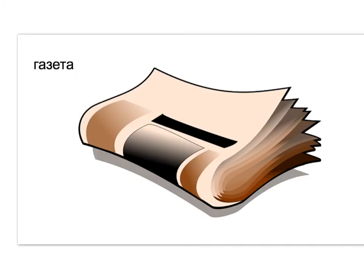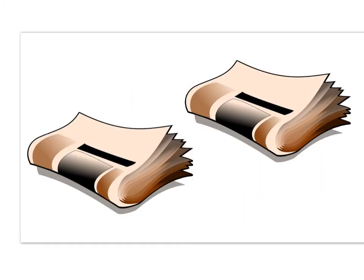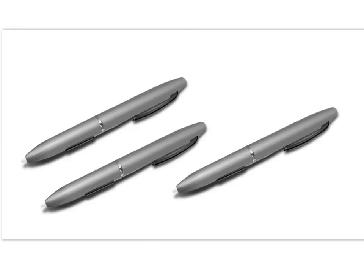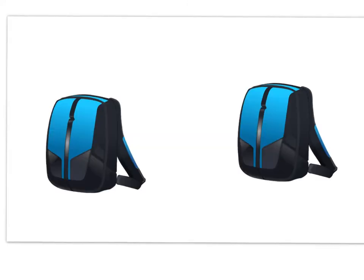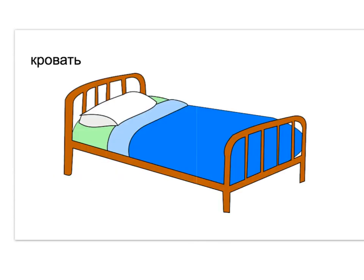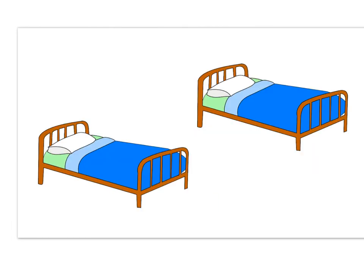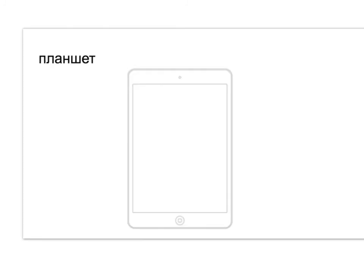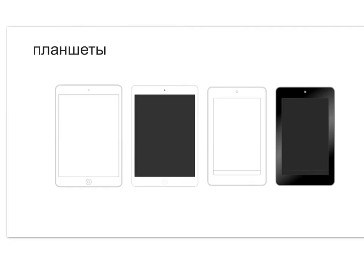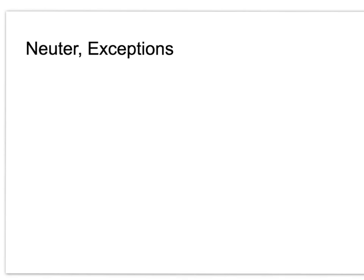Сейчас у меня газета. А сейчас у меня газеты. У меня ручка. А сейчас у меня ручки. У меня один рюкзак. А сейчас у меня рюкзаки. У меня одна кровать. У меня планшет. А сейчас у меня планшеты.